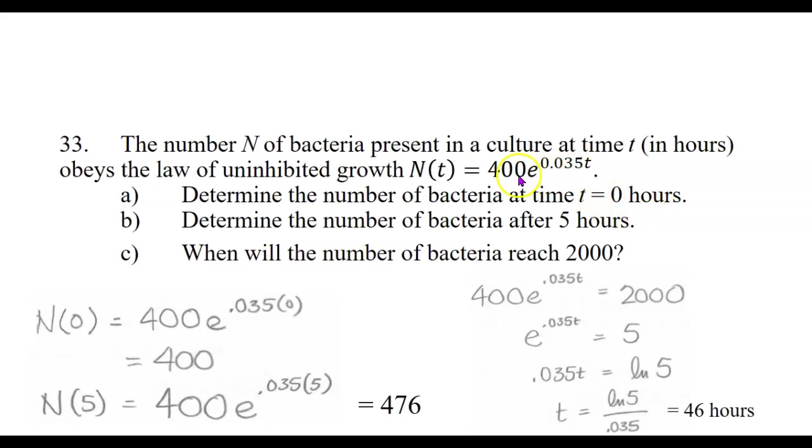Right away I can say that's going to be 400 because this number out in front of an exponential function like this is your initial value, your starting value at time t equals zero. If you actually plug in zero for t, 0.035 times zero would be zero, e to the zero power would be one, and then 400 times one would be 400.